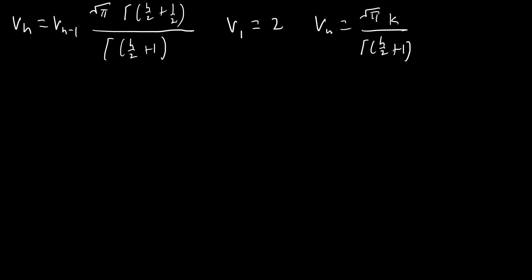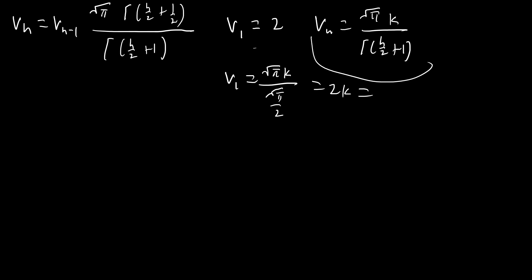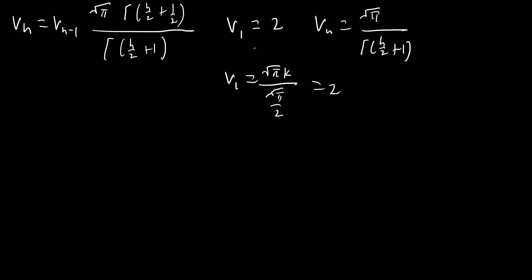To solve for k, use V₁ = 2. Plugging n = 1: V₁ = k · √π / Γ(3/2) = k · √π / (√π/2) = 2k. Since V₁ = 2, we get k = 1. Therefore Vₙ = π^(n/2) / Γ(n/2 + 1).